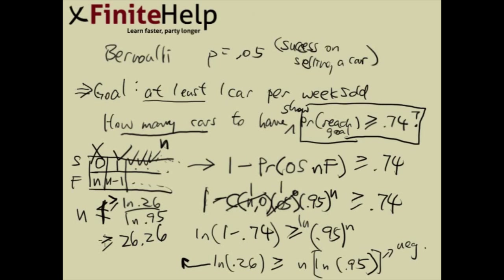Since you cannot have a quarter of a showing, N has to be 27. So the answer is 27 showings needed to have at least a 74% chance of selling at least one car.